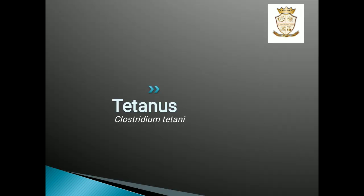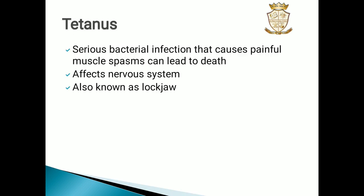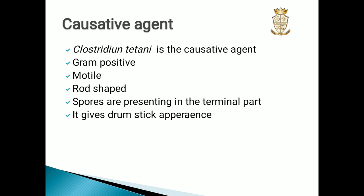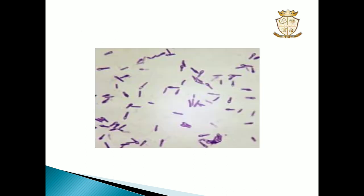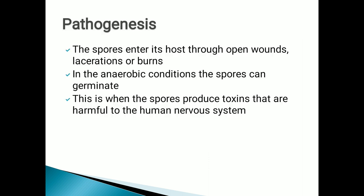The fourth and final disease is tetanus. The causative agent of tetanus is Clostridium tetani. Tetanus is a serious bacterial infection that causes painful muscle spasms and can lead to death, as it directly affects the nervous system. It is also known as lockjaw. Clostridium tetani is a gram-positive, motile, rod-shaped bacterium. The spores are present at the terminal part of the cell, giving it a drumstick appearance.